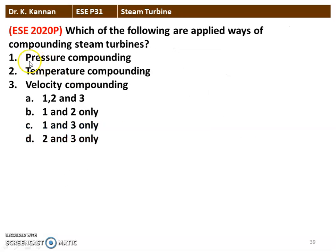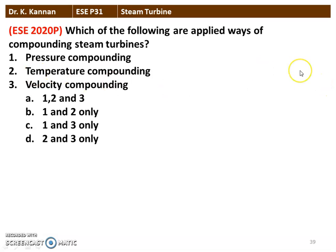The next question from the 2020 question paper: which of the following are applied ways of compounding the steam turbine? — pressure compounding, temperature compounding, velocity compounding. There is no temperature compounding; it is either pressure compounding or velocity compounding. The answer is option C: 1 and 3 — pressure compounding and velocity compounding.